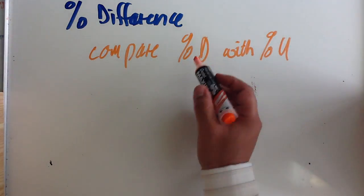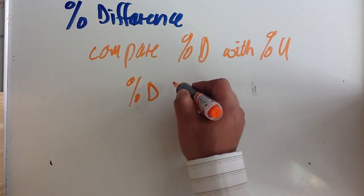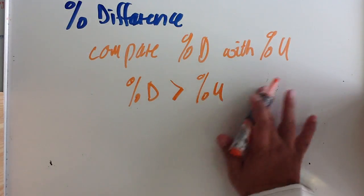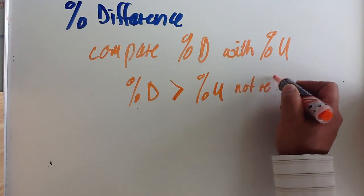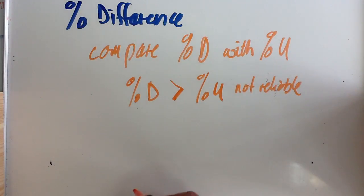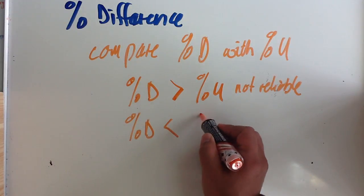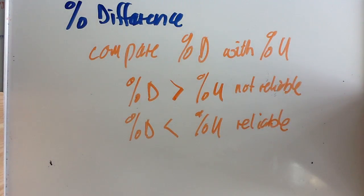If your percentage difference is greater than your percentage uncertainty, then the data is considered to be not reliable. If your percentage difference is less than your percentage uncertainty, then your data is considered reliable.